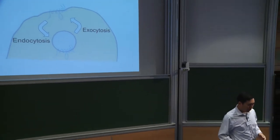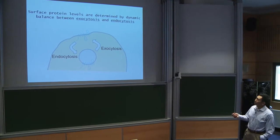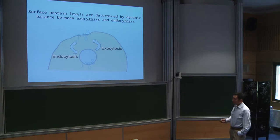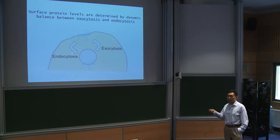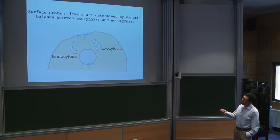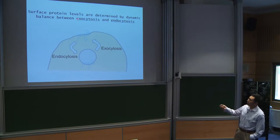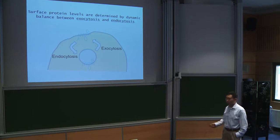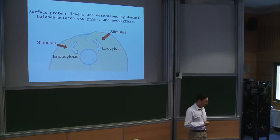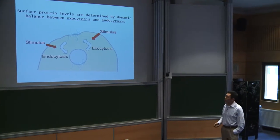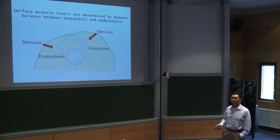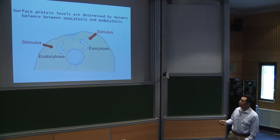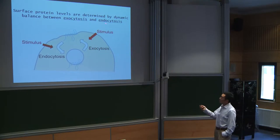How is the surface level of protein determined? It's determined by the balance of exocytosis and endocytosis. Exocytosis is a vesicle fusion event, which involves the fusion of an exocytic vesicle with the plasma membrane, delivering cargo to the plasma membrane. Endocytosis, on the other hand, removes cargo from the plasma membrane and returns it to endocytic compartments. Remarkably, both exocytosis and endocytosis can be regulated by stimulus, and in this way the surface level of a membrane protein can be adjusted acutely according to physiological demands — stimulus could be a second messenger or a phosphorylation.